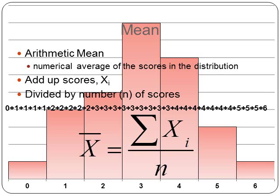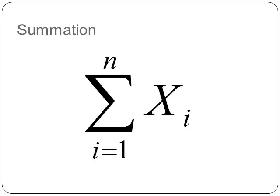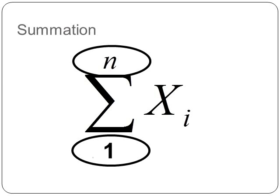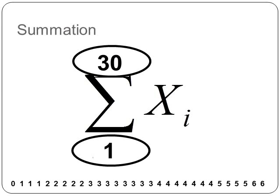In our data set, we take all scores — 0, 1, 1, 1, etc., all the way through 6 — sum them up to 90, divide by the number of cases (30), and get a mean of 3. The summation operator uses the uppercase Greek letter sigma. Starting at i equals 1 means we start at the first person or object and go through n (the total number). So we sum x₁, x₂, x₃, etc., all 30 values together.